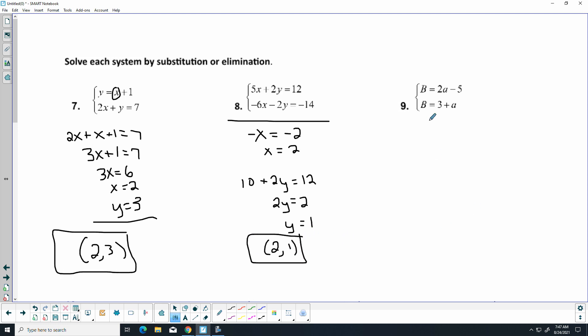All right, on the next one, looks like b is equal to both of those, so I'm going to do really kind of a substitution, just set them equal to each other, 2a minus 5 equals 3 plus a, subtract a from both sides, add 5, and you get a equals 8, and b is 11. So, you go alphabetical, 8, 11.